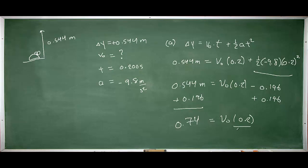And finally if we divide both sides of the equation by 0.2 we'll be left with the initial speed.